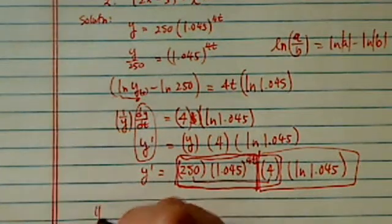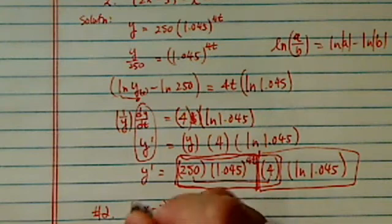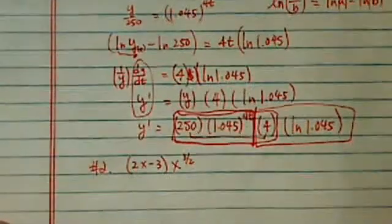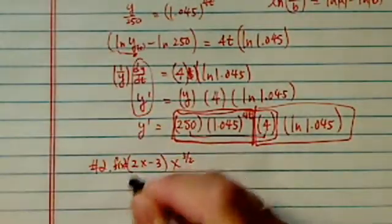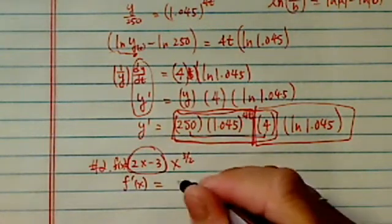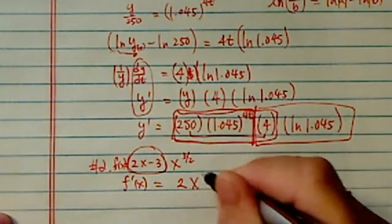Now let's take a look at number 2. For this one, we have (2x - 3) times x to the 3 halves. Now, this one is not hard. It's a little tedious. So you need to keep track of what you're doing over here. f(x) equal to this. f prime of x. We're going to take derivative of the first one, which is equal to 2.